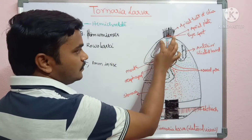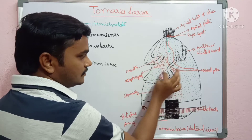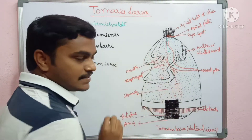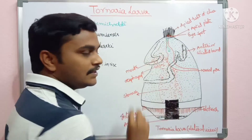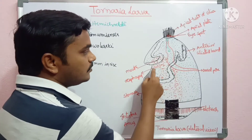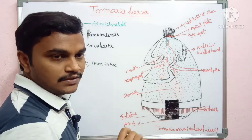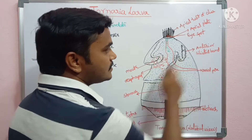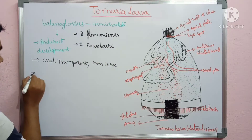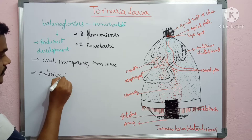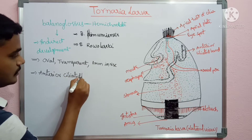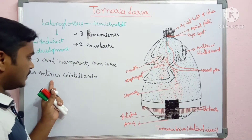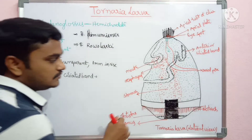First, we can see one ciliated band. The black color dots represent cilia present in the tornaria larva. These are called the anterior ciliated band, which is located before the mouth — also called the pre-oral band. The anterior ciliated band is located in front of the mouth.